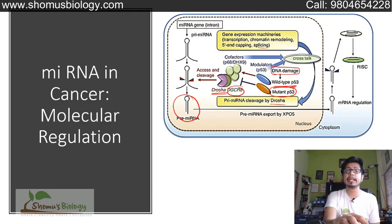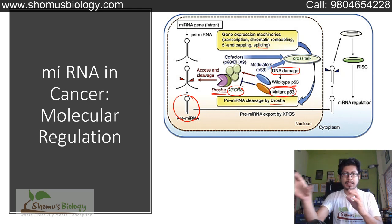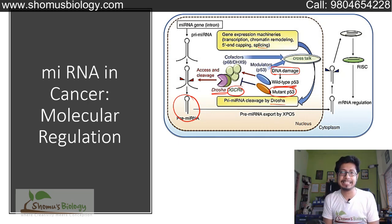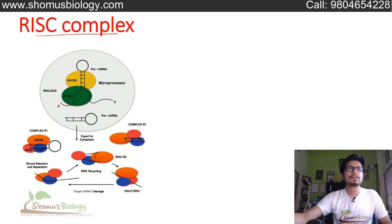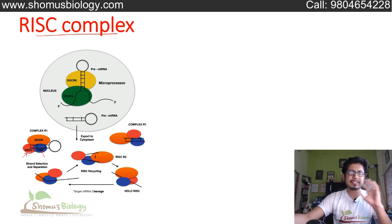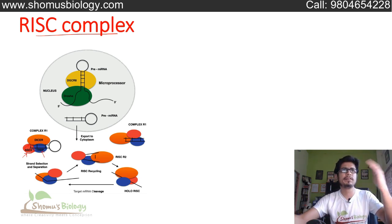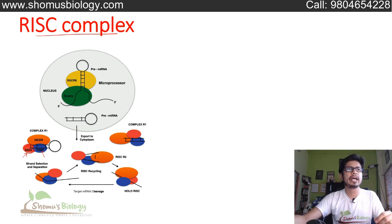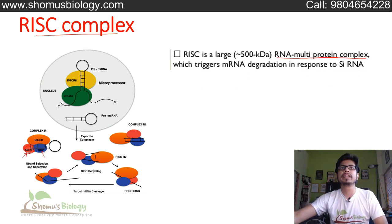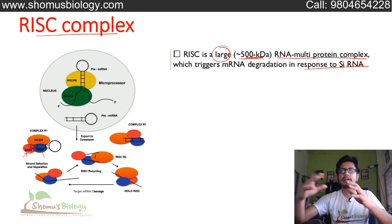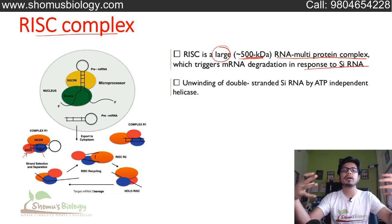Now, what is this RISC that we have been talking about? Remember, the RISC complex consists of two strands of siRNA. It contains Argonaute protein known as AGO2, another accessory protein known as TRBP, and Dicer is sometimes involved — though Dicer's work is done even before the idea of RISC. So AGO2 and TRBP together form what is known as the RISC complex. RISC is a large RNA multi-protein complex which triggers mRNA degradation in response to siRNA. We call it large because it has a molecular weight of 500 kilodaltons.